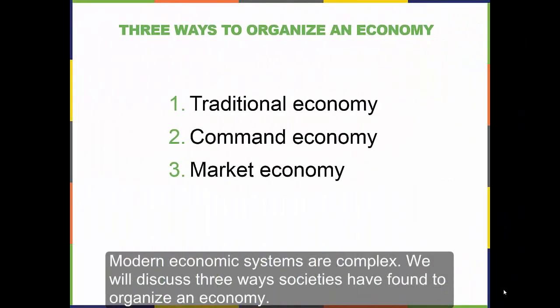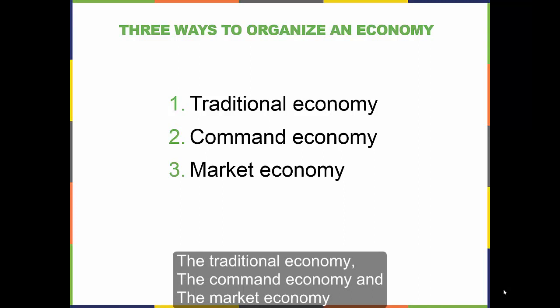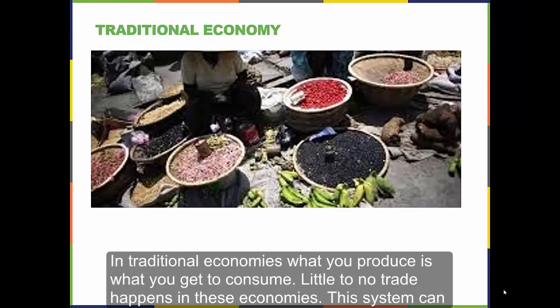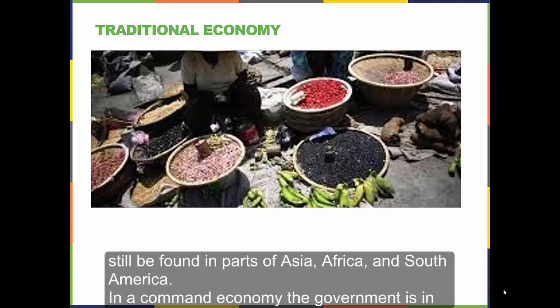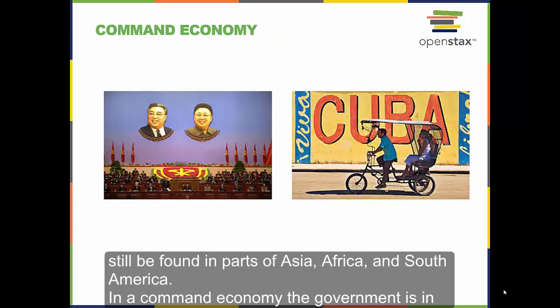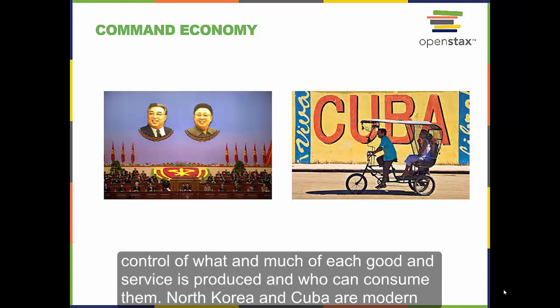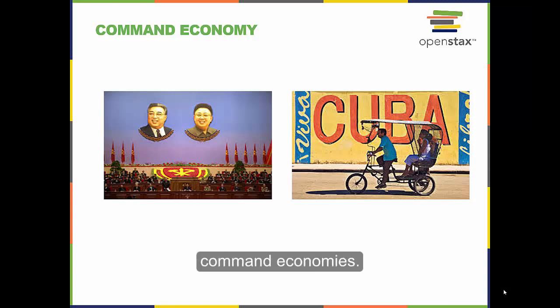Modern economic systems are complex. We will discuss three ways societies have found to organize an economy: the traditional economy, the command economy, and the market economy. In traditional economies, what you produce is what you get to consume — little to no trade happens in these economies. This system can still be found in parts of Asia, Africa, and South America. In a command economy, the government is in control of what and how much of each good and service is produced, and who can consume them. North Korea and Cuba are modern command economies.